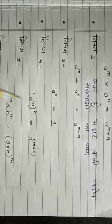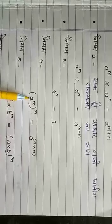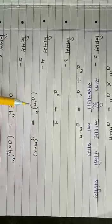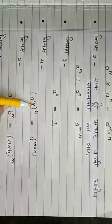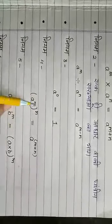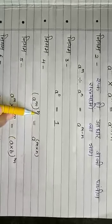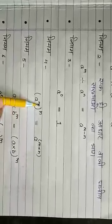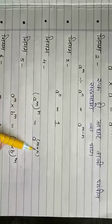नियम 4: अगर किसी घात संख्या का गुणा — यानि कि A की power M की whole power N हो, तब ये घातें एक दूसरे से गुणा होती हैं। जैसे कि यहाँ पर A की power M की whole power N है तो A की power M गुणे N हो जाएगा, क्योंकि घातें आपस में multiply हो जाती हैं। (Rule 4: (A^M)^N = A^(M×N) — the exponents multiply together.)